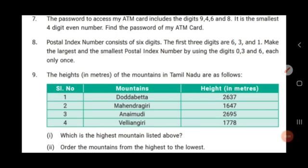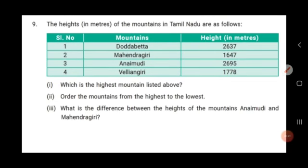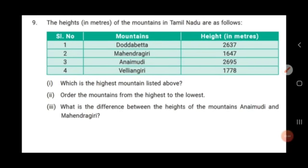Next, question number 9. The heights in meters of the mountains in Tamil Nadu are as follows. Doddabetta: 2,637 meters. Mahendragiri: 1,647 meters. Anaimudi: 2,695 meters. Vellingiri: 1,778 meters. There are 3 sub-questions. The first question: which is the highest mountain listed above?